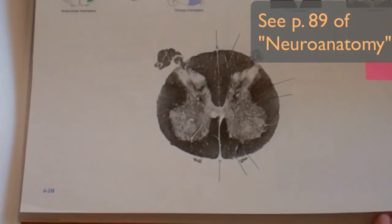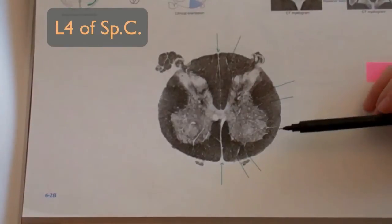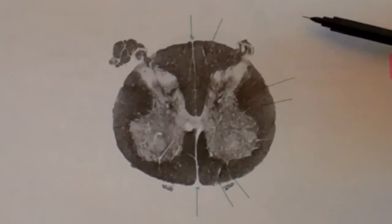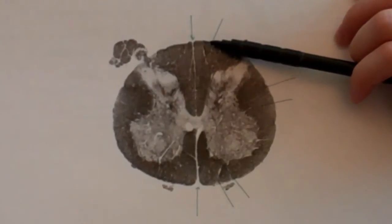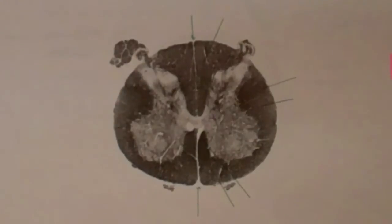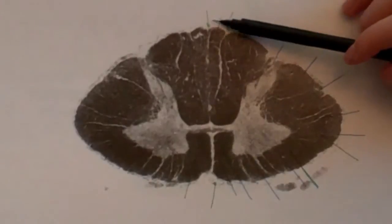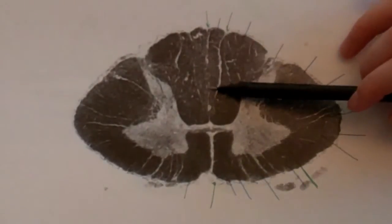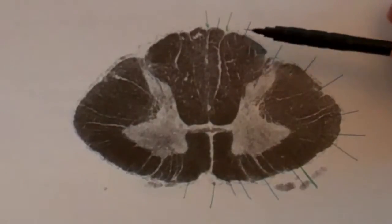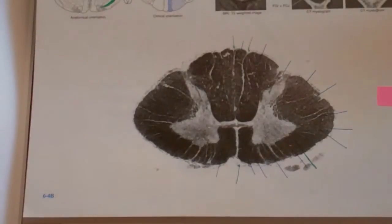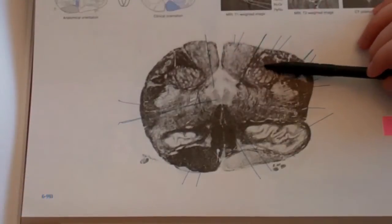Now let's look at what happens inside the spinal cord. Here we are at the level L4, so we are below C8. The sensory neurons will send their fibers to the fasciculus gracilis, which will then ascend all the way up to the medulla. At the level of C7, which is above C8, you have fibers coming up from the fasciculus gracilis, and here you have fibers coming from the fasciculus cuneatus — both sets ascend to the medulla. In a section through the medulla, you can see the nucleus gracilis and the nucleus cuneatus.